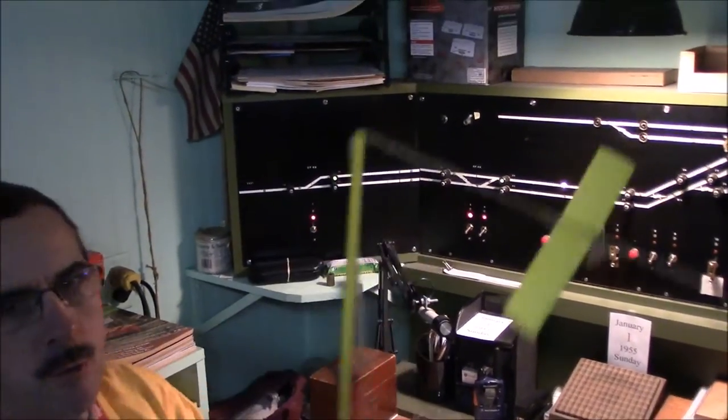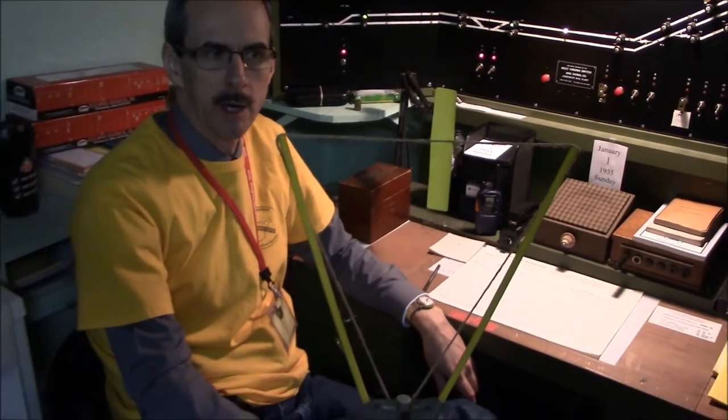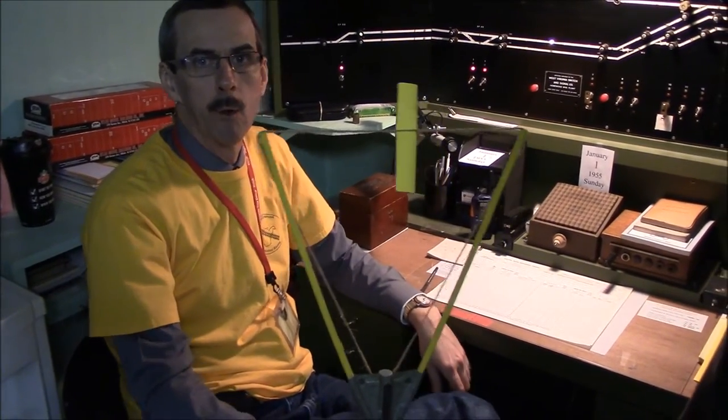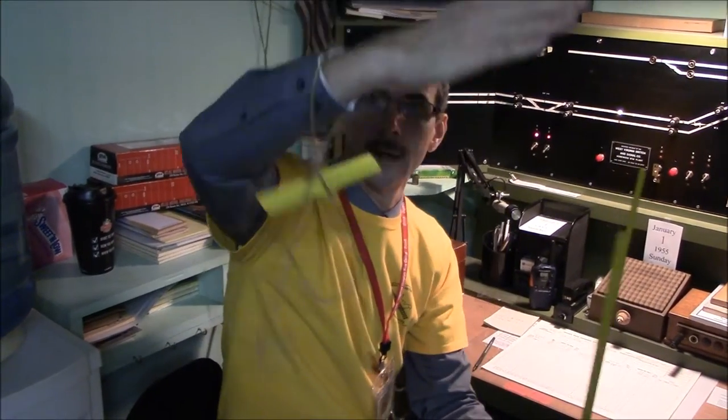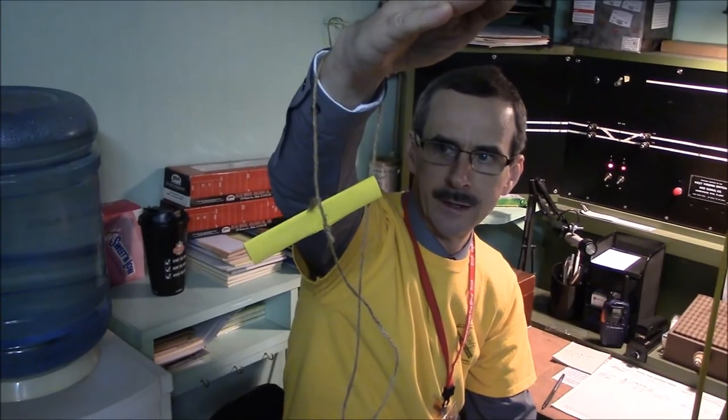Viewers might be interested in the train order delivery. At one time, tower operators would copy a train order from a dispatcher, and then they would go out and they'd stand in front of the office and they'd hold it up high, and then the engineer, whoever was on the head end riding, they'd reach out the window, and they'd scoop the string, and they'd go off with the order. And then they could take the train order out and they could read their directions. They were still doing this at Grafton up until the summer of 1989, I believe.